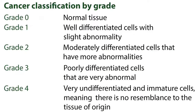Cancers can also be classified by grade, in which the cancer is examined for its cellular maturity and characteristics. Cells that are undifferentiated are highly abnormal or immature and primitive with respect to surrounding tissues. Grade 0 is normal tissue. Grade 1 is well-differentiated cells with slight abnormality. Grade 2 is moderately differentiated cells that have more abnormalities. Grade 3 is poorly differentiated cells that are very abnormal. Grade 4 is very undifferentiated and immature cells, meaning there is no resemblance to the tissue of origin.